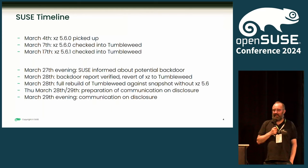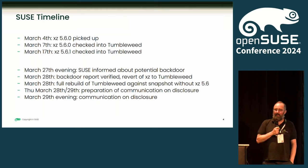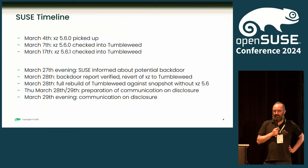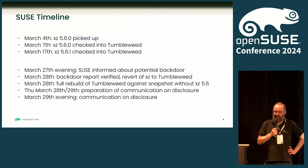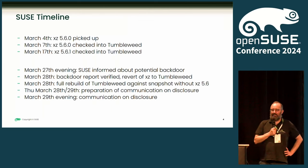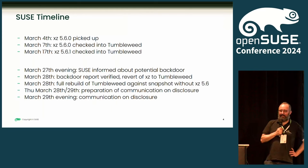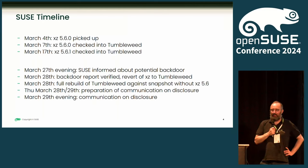We then started mitigation measures. The first was that we reverted the XZ version in Tumbleweed to the previous 5.4.6 version. Also, our BuildOps team and some other colleagues like Dirk started to trigger a full rebuild of Tumbleweed against a previous snapshot without the malicious XZ in it. At the time, we didn't even know exactly what it was doing — we were just kind of sure it was doing some bad things. On the whole of March 28th, we prepared in parallel the communication about it, and verified that our enterprise products were not yet affected.